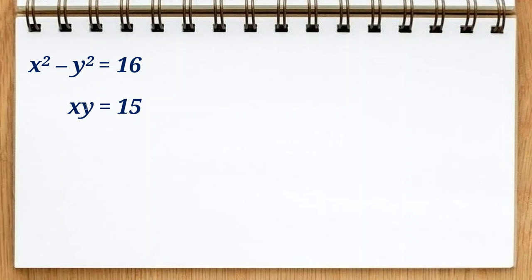x squared minus y squared equals 16, xy equals 15. We want to find x and y. So in the first step, we use replacement. We divide—x is not zero because if x is zero then this product is zero, but not 15.